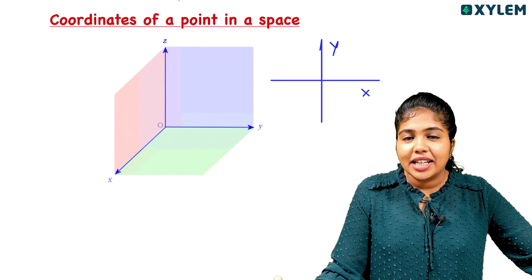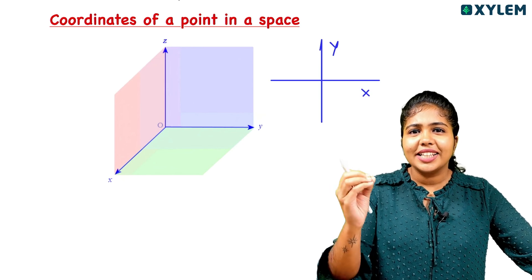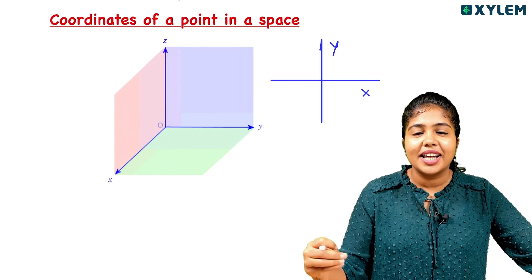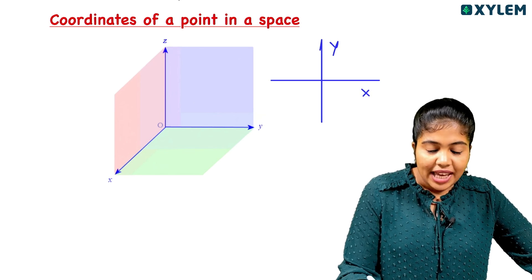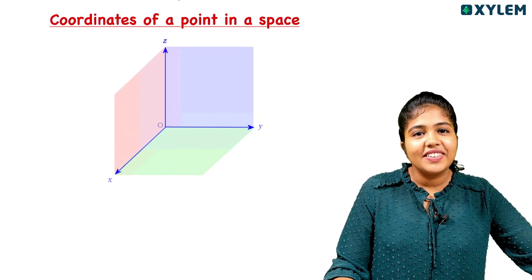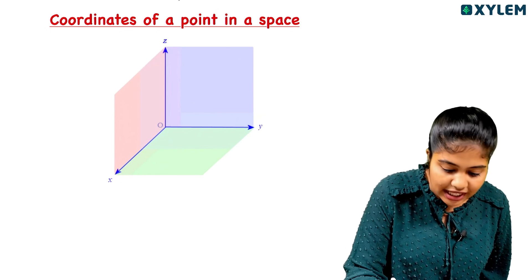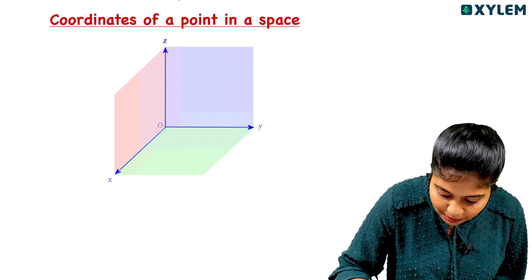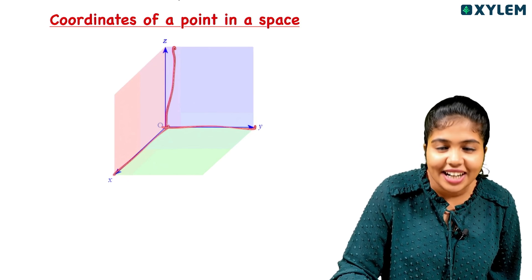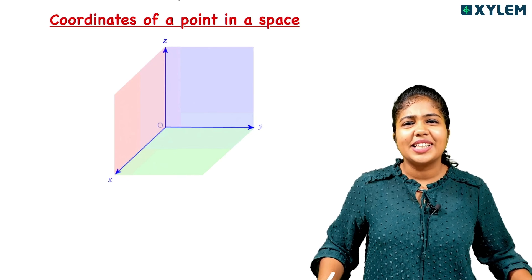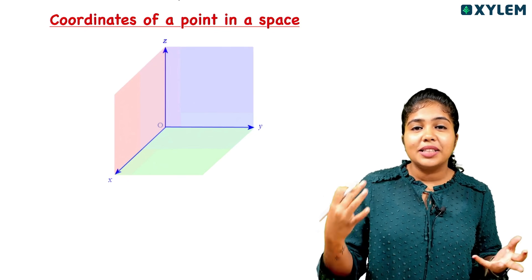But in 3D geometry, we have 3 axes. If we have x and y in 2D, then in 3D we have x, y, and z. This is our x-axis, this is our y-axis, and this is our z-axis. We have the x-y plane in 2D geometry.